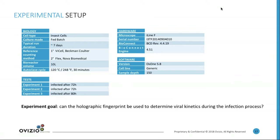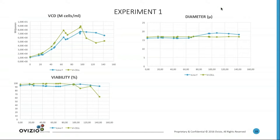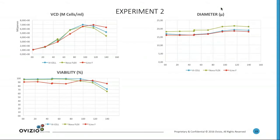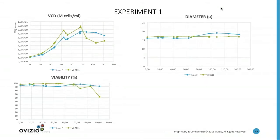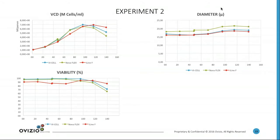The experimental setup used insect cells SF9 together with baculovirus — the baculovirus expression system in fed-batch mode, with seven days duration per typical run. Three experiments were performed: the first two infections happened after 72 hours, the third after 80 hours. The question was: can the holographic fingerprint be used to determine viral kinetics during the infection process? We compared the device on regular parameters like viable cell density, diameter, and viability with the standard methods of our partners.